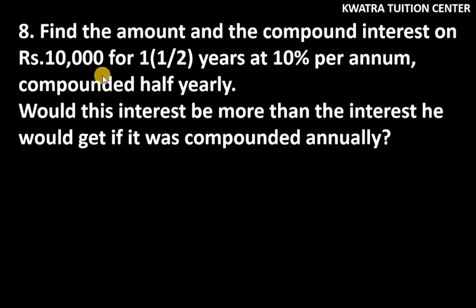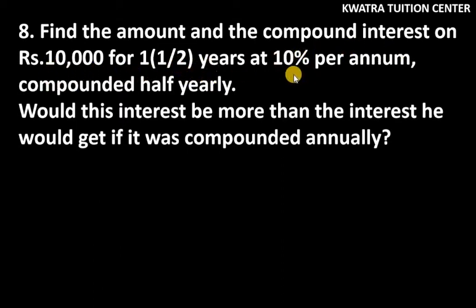Hello everyone, let's start with question number 8. It says: find the amount and the compound interest on 10,000 for 1 and a half years at 10% per annum compounded half yearly.